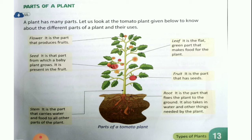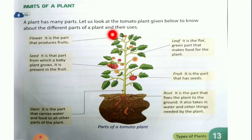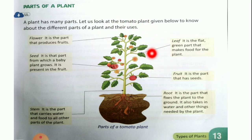A plant has many parts. Let us look at the tomato plant given below to know about the different parts of a plant and their uses. This is a tomato plant — you can see there are tomatoes on the plant. From this we will learn the different parts of plants, what they do, and how they are helpful. Just as we have different types of body parts, plants also have different types of parts and they work according to their functions.